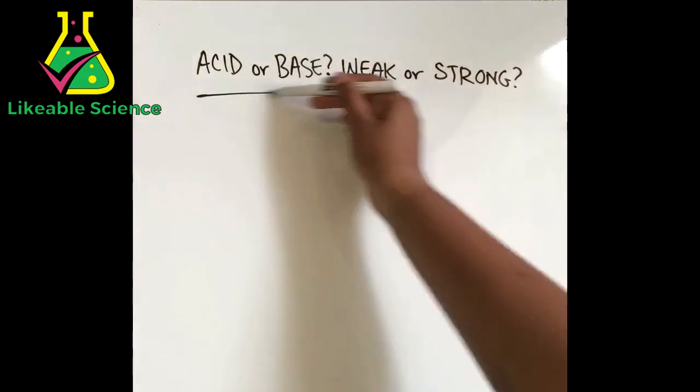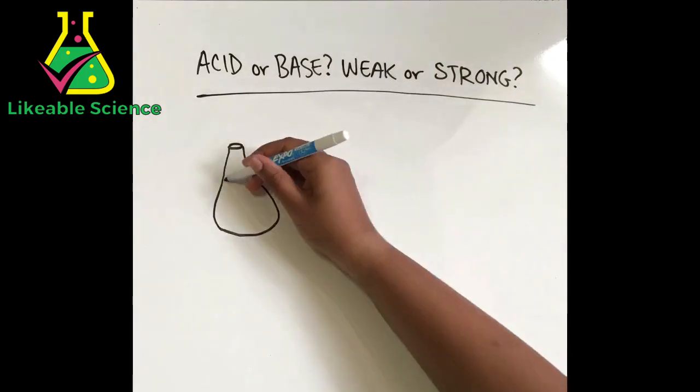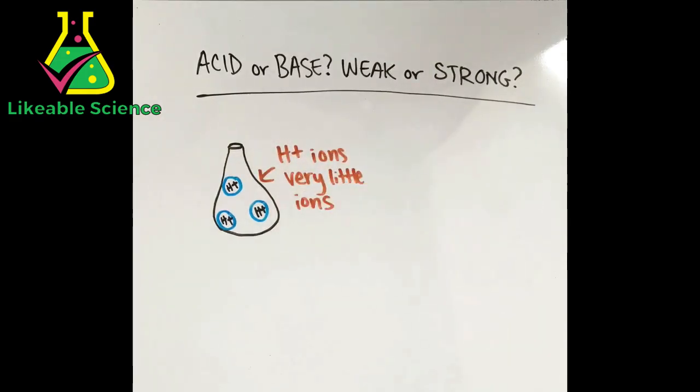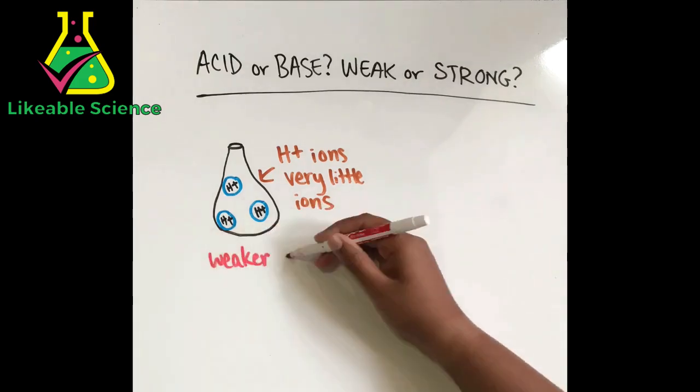Let's try to find if the substances are an acid or a base and if they're weak or strong. The first one produces hydrogen ions, so it has to be an acid. It also produces less ions, so it would be a weaker substance. The answer would be a weak acid.